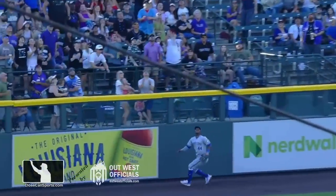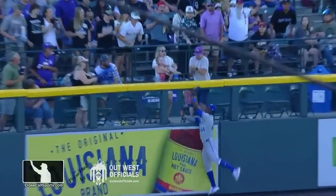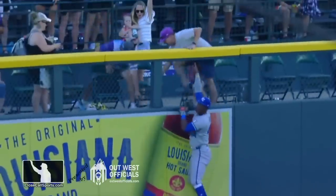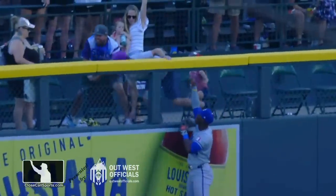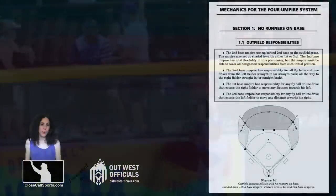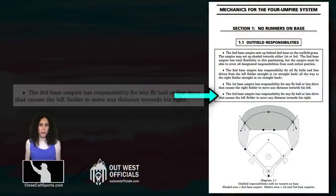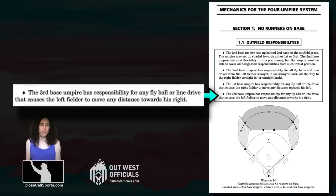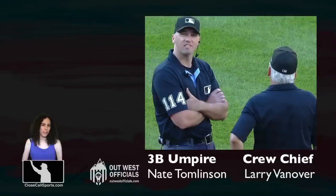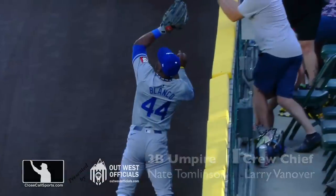We have the left fielder ranging to the foul line side toward his right. That is the third base umpire's responsibility with no one on, no one out. And we see the third base umpire is the umpire that is part of the review with the chief. So that tracks.